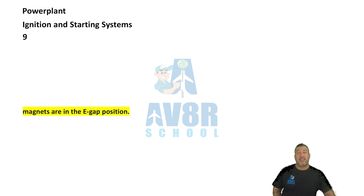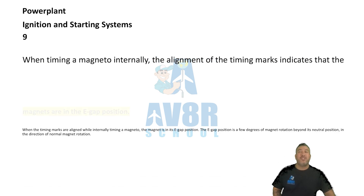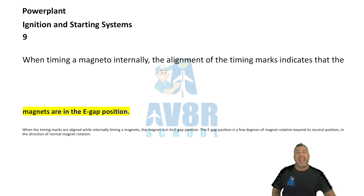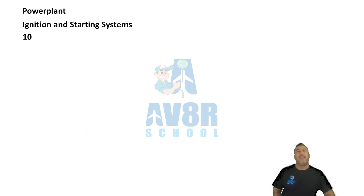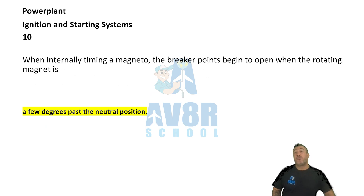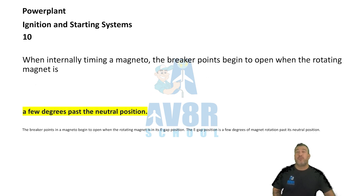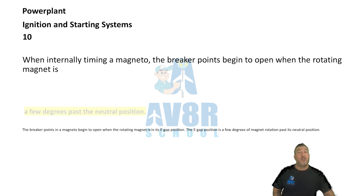Number nine: Magnets are in the E-gap position. When timing a magneto internally, the alignment of the timing marks indicates that the magnets are in the E-gap position. Number ten: A few degrees past neutral position. When internally timing a magneto, the breaker points begin to open when the rotating magnet is a few degrees past the neutral position.